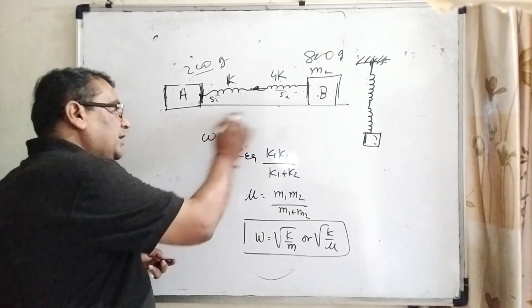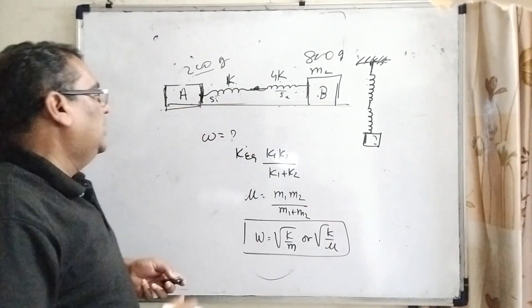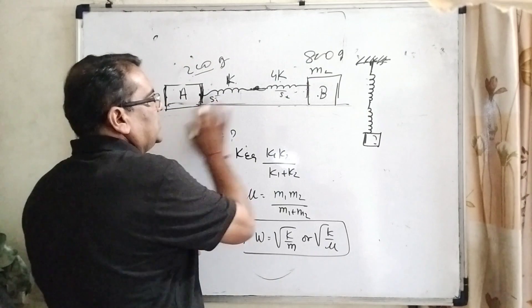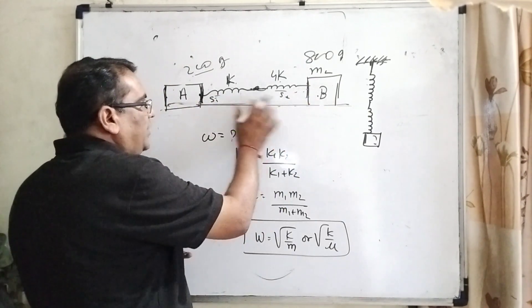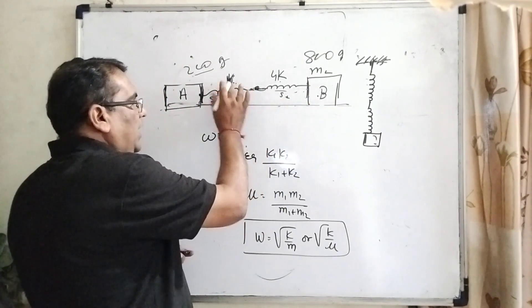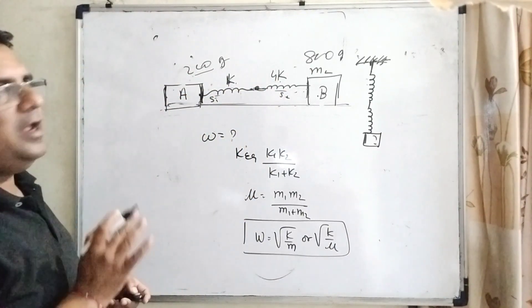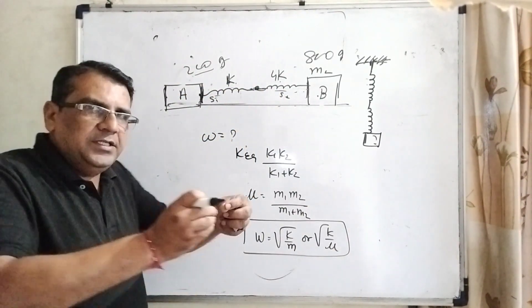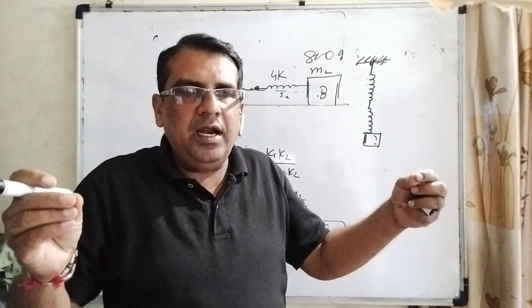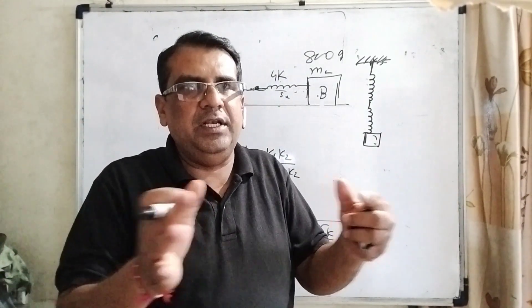Have a look at this diagram. Here we have two blocks A and B which are connected with two springs with spring constants k and 4k, and masses 200 and 800 grams. When stretched in opposite directions and released, it begins to oscillate.